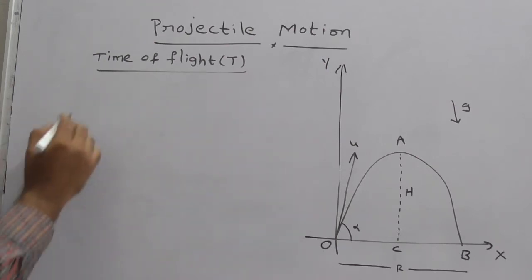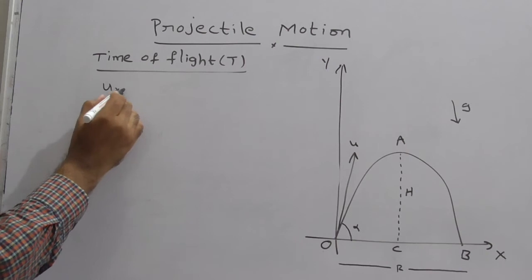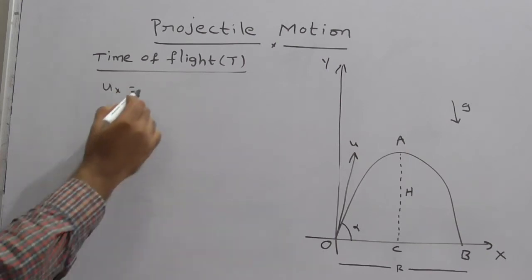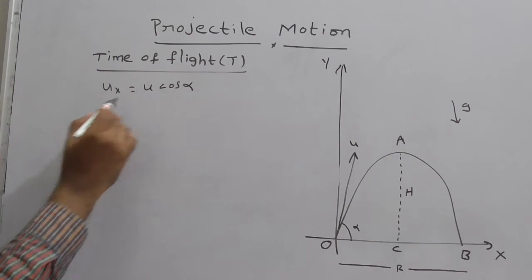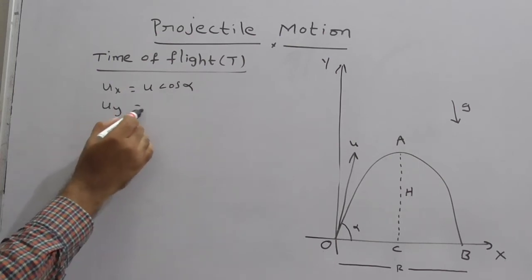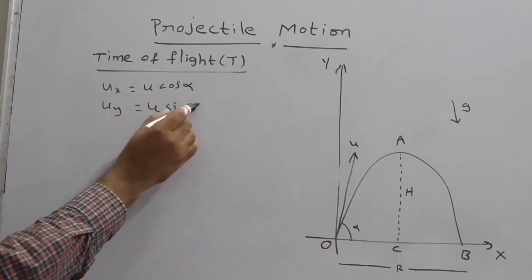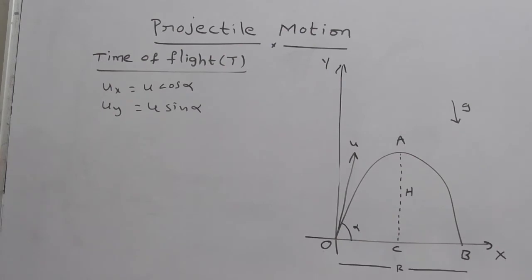By using this, you can write ux is equal to u cos alpha and uy is equal to u sin alpha. What is u? Initial velocity. So ux is equal to u cos alpha, uy is equal to u sin alpha.